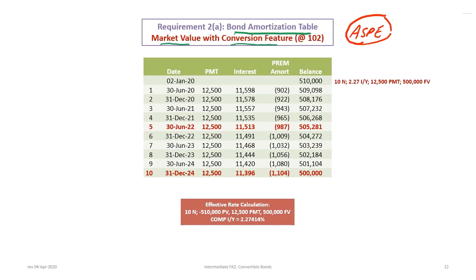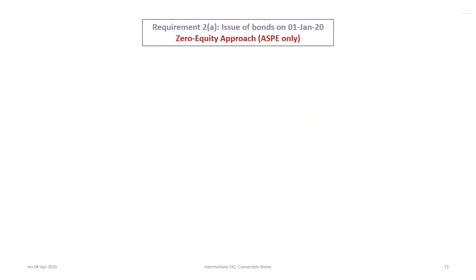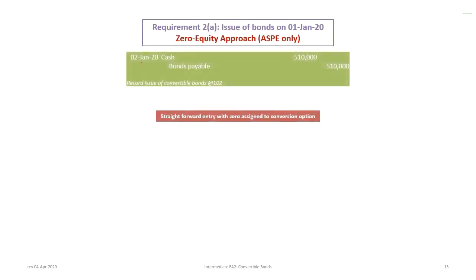We have a $510,000 sales value, because that's how much cash was received. This amortization is exactly the same as before, and we still calculate the effective rate of 2.27% (more precisely, 2.27414%). To record the bond issuance using the zero equity approach under ASPE, the journal entry is straightforward: on January 2nd, 2020, debit cash $510,000 and credit bonds payable $510,000. Zero is assigned to any conversion option — that's the key difference.